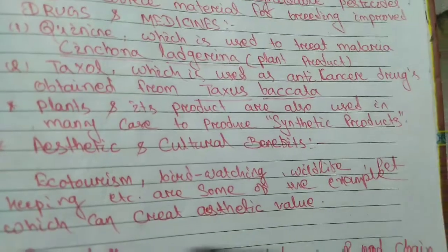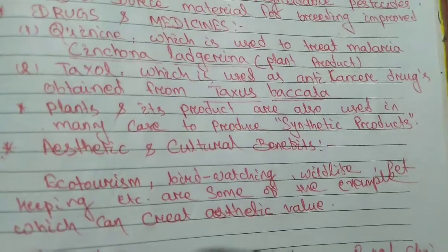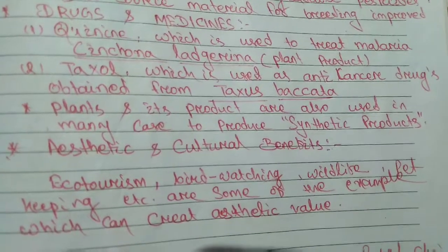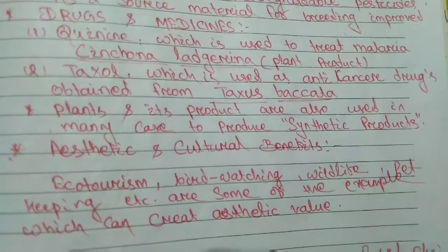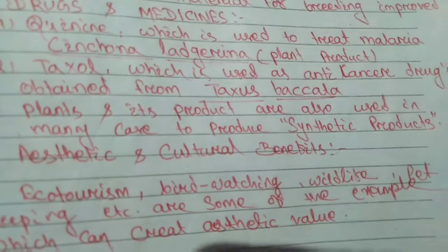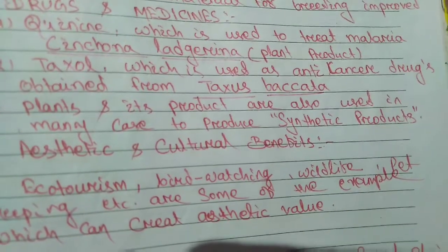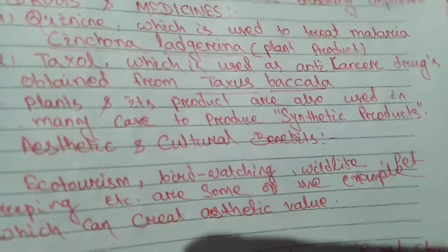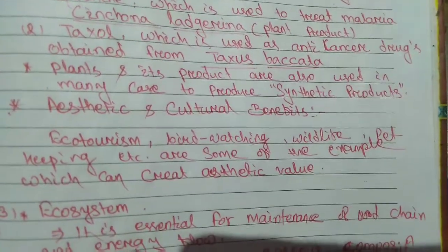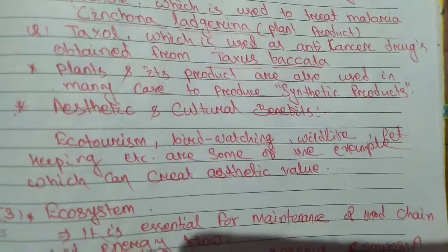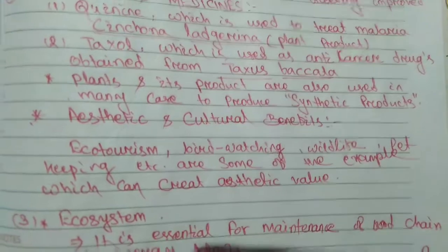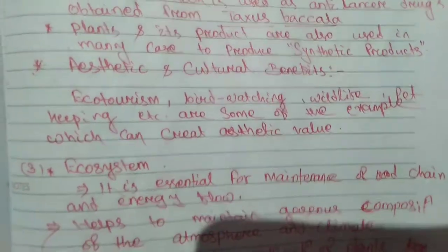Taxol, which is used as an anti-cancer drug, is obtained from plants. Plant and plant products are also used in many cases to produce synthetic products, meaning that synthetic products can be derived from biodiversity.